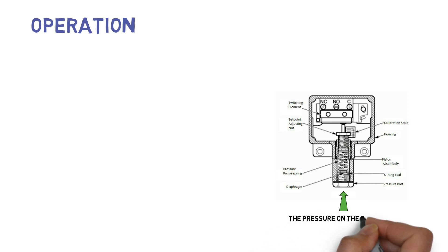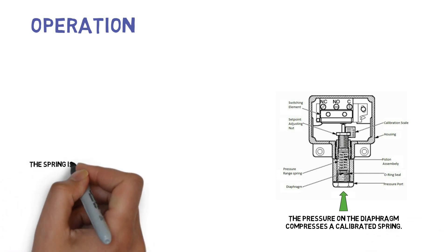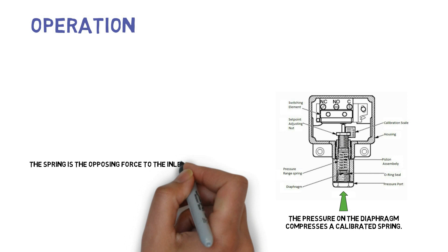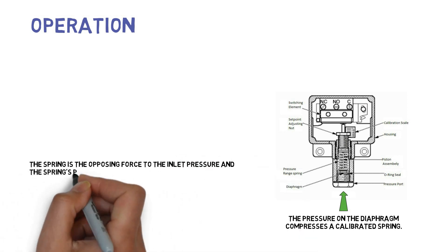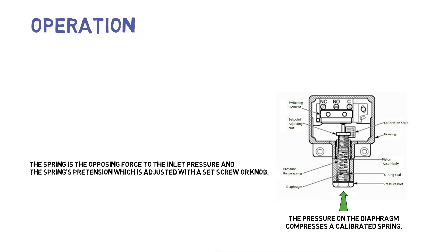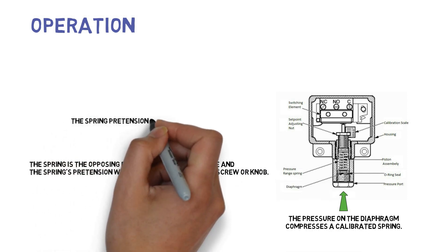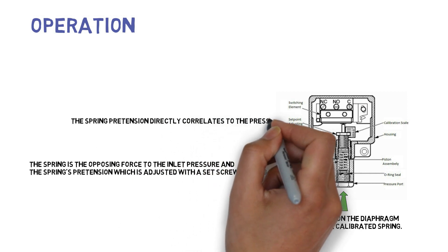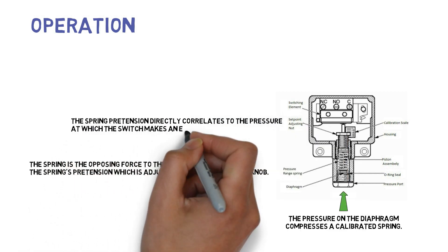The pressure on the diaphragm compresses a calibrated spring. The spring is the opposing force to the inlet pressure, and the spring's pretension is adjusted with a set screw or knob. The spring pretension directly correlates to the pressure at which the switch makes an electric contact.